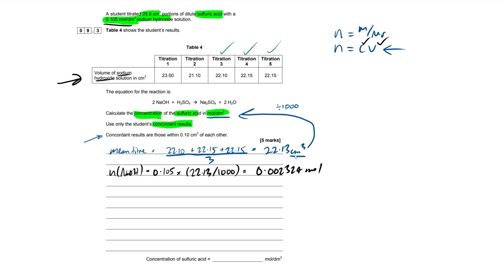We don't actually care about the sodium hydroxide directly — we need the concentration of sulfuric acid. So we look at the mole ratios from the equation given. The molar coefficients show that sodium hydroxide and sulfuric acid react in a 2:1 ratio. So whatever moles we have of sodium hydroxide, we divide by two to get the moles of sulfuric acid.